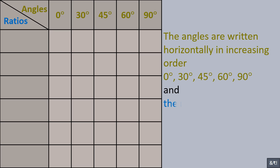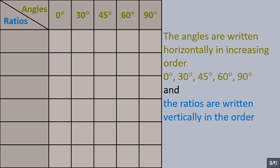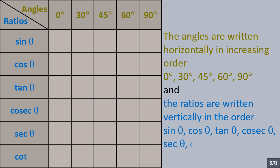The ratios are written vertically in the order: sine theta, cos theta, tan theta, cosec theta, sec theta, cot theta.